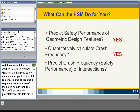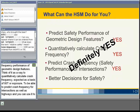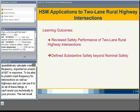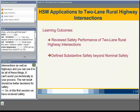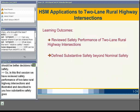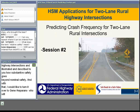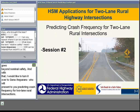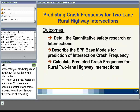The Highway Safety Manual documents best practices to reduce crashes. Think of it as a way to predict crash frequency performance of geometric design features, to quantitatively calculate expected crash frequency as a basis of ADT or exposure, and to predict crash frequency for intersections as well as highways. The net result should be better decisions for safety. In this first session, we reviewed safety performance of two-lane rural highway intersections and illustrated how substantive safety goes beyond nominal safety. With that, I'd like to turn it over to Gene Aparano, who will present predicting crash frequency for two-lane rural intersections.